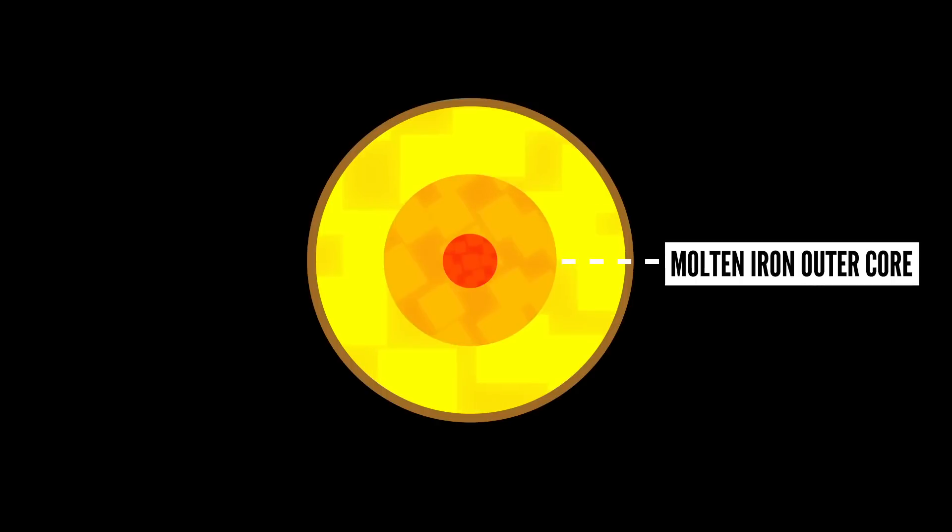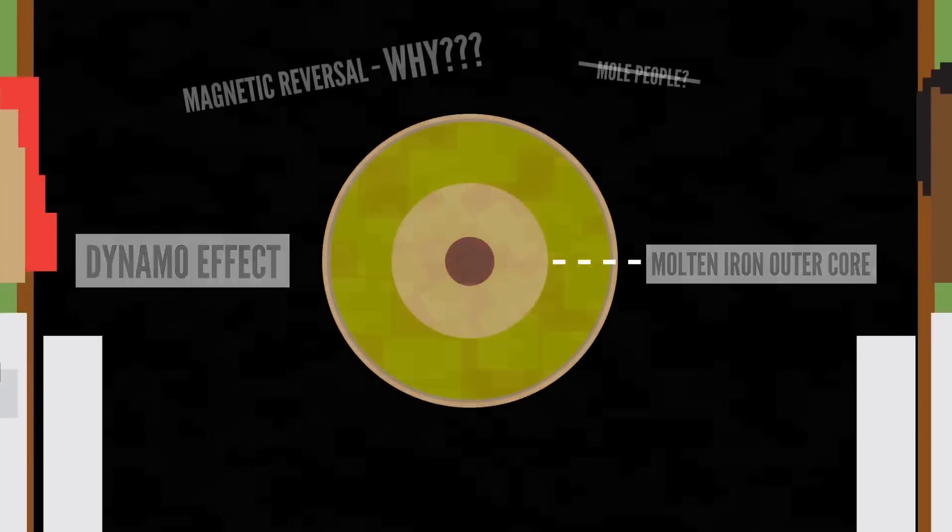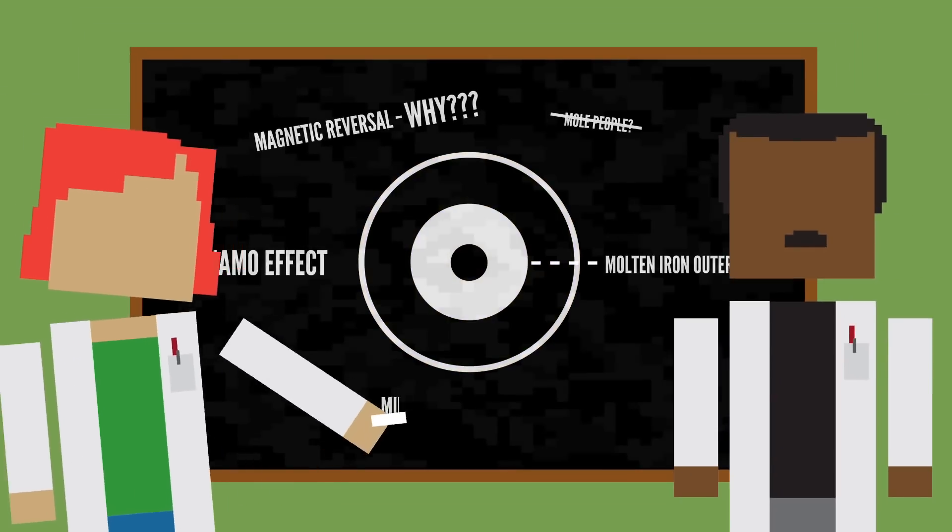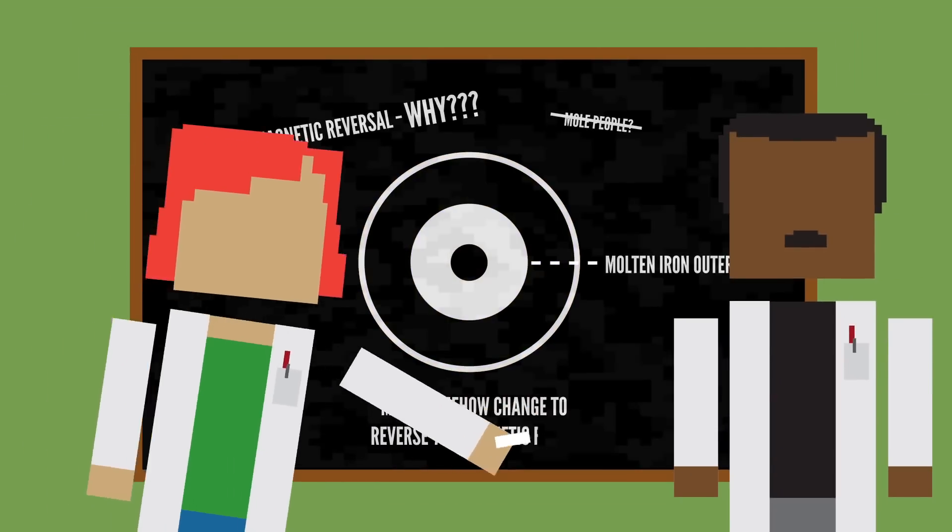And the motion of that molten iron, along with some complicated physics, generates a magnetic field through something called the dynamo effect. And for reasons still unknown to scientists, the molten iron's motion must somehow change to reverse the magnetic field.